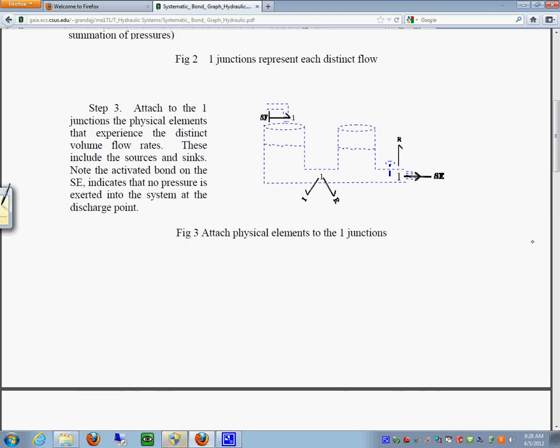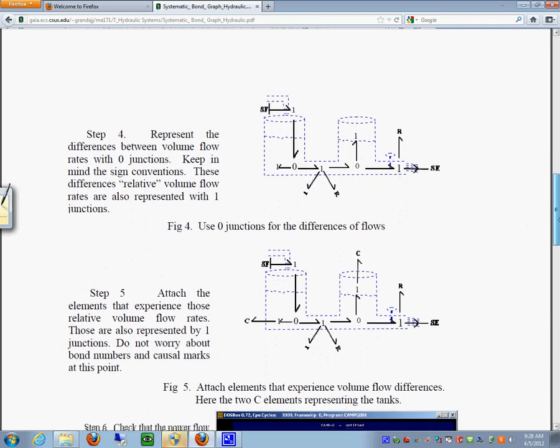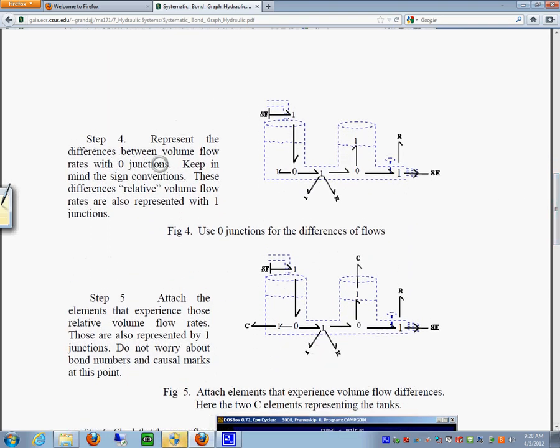And now after this step we'll come over here and put the difference between those flows. So between this and this we created using a zero junction. Between this and this one we created this using a zero junction. So it's the difference. What it's saying is that the flow that comes in here minus what goes over here is what remains in the tank. Same thing over here. The flow over here minus what went in the tank is what continues. That's another way of saying it.